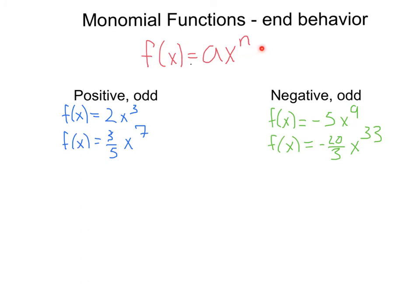So we've seen that when we have an even exponent, both end behaviors are the same, either pointing up if it's positive, down if it's negative.